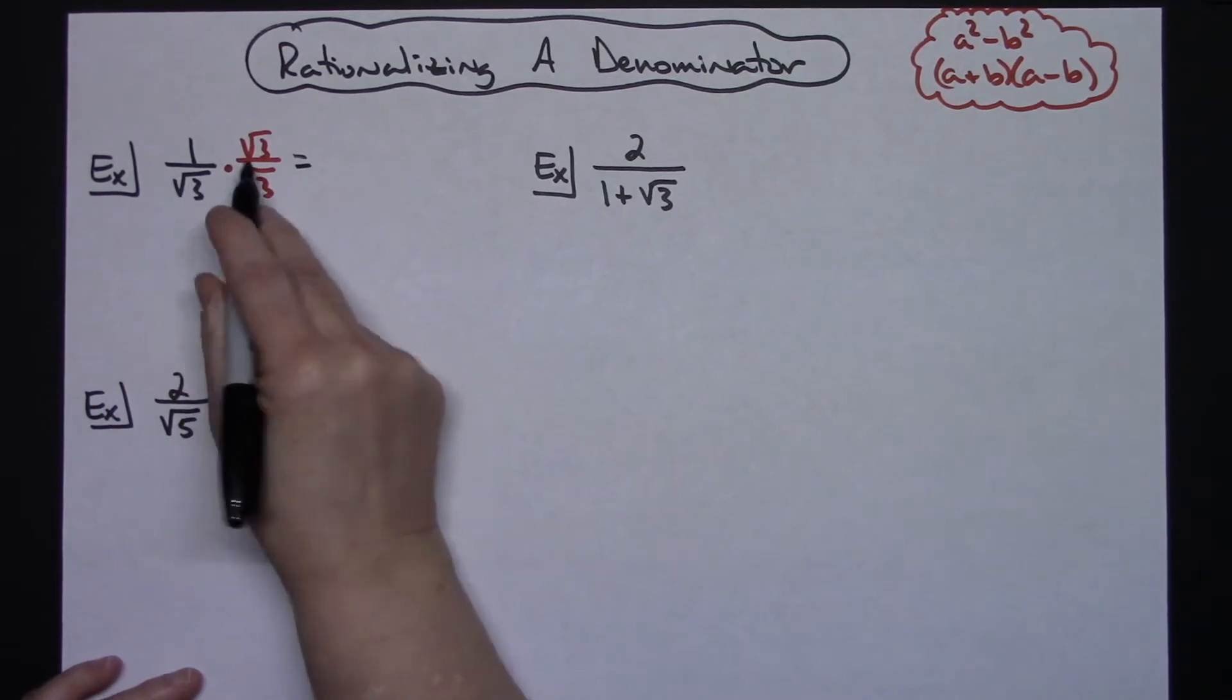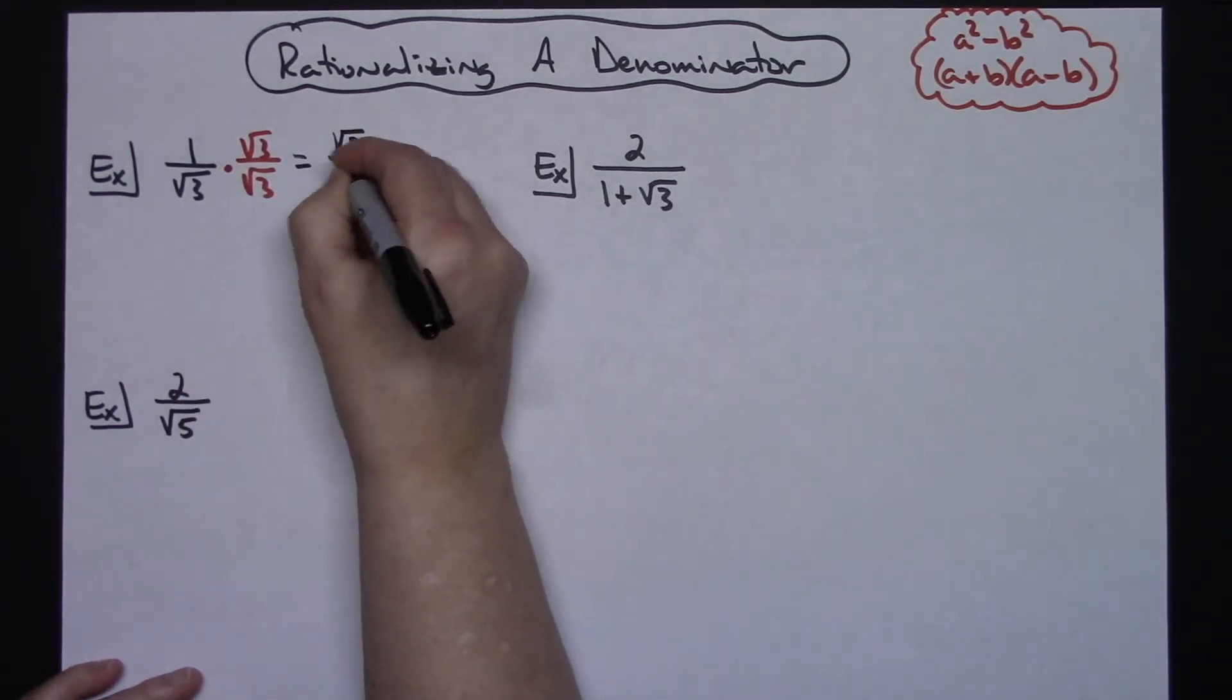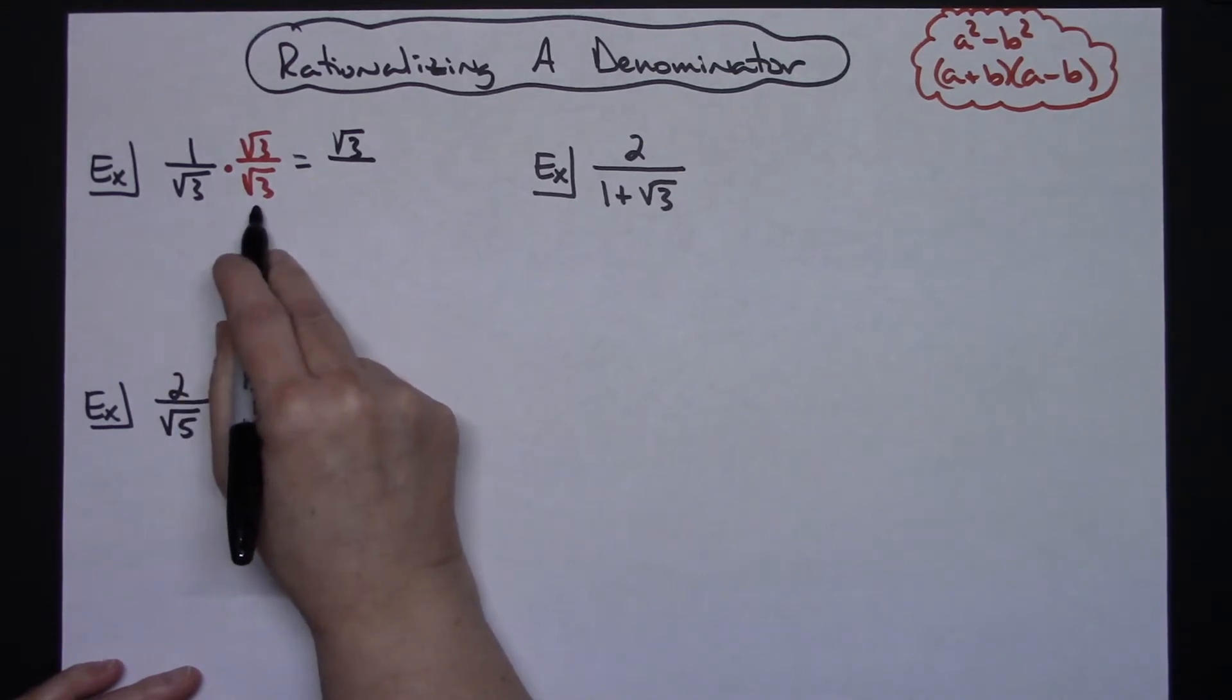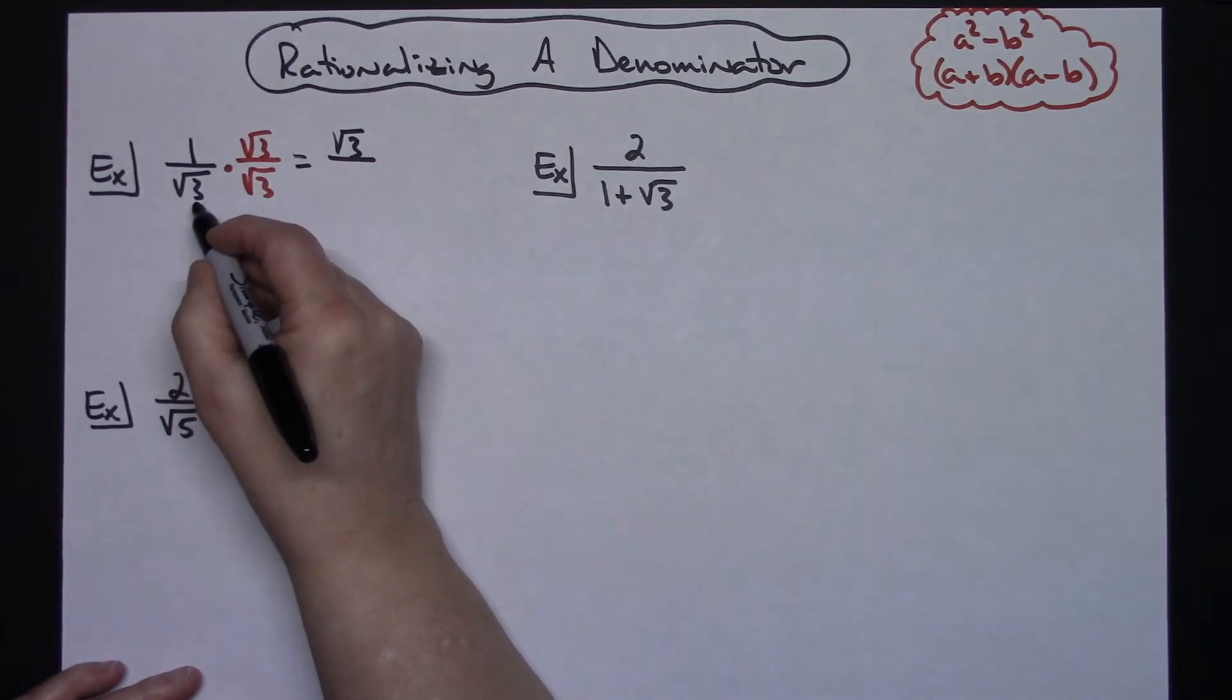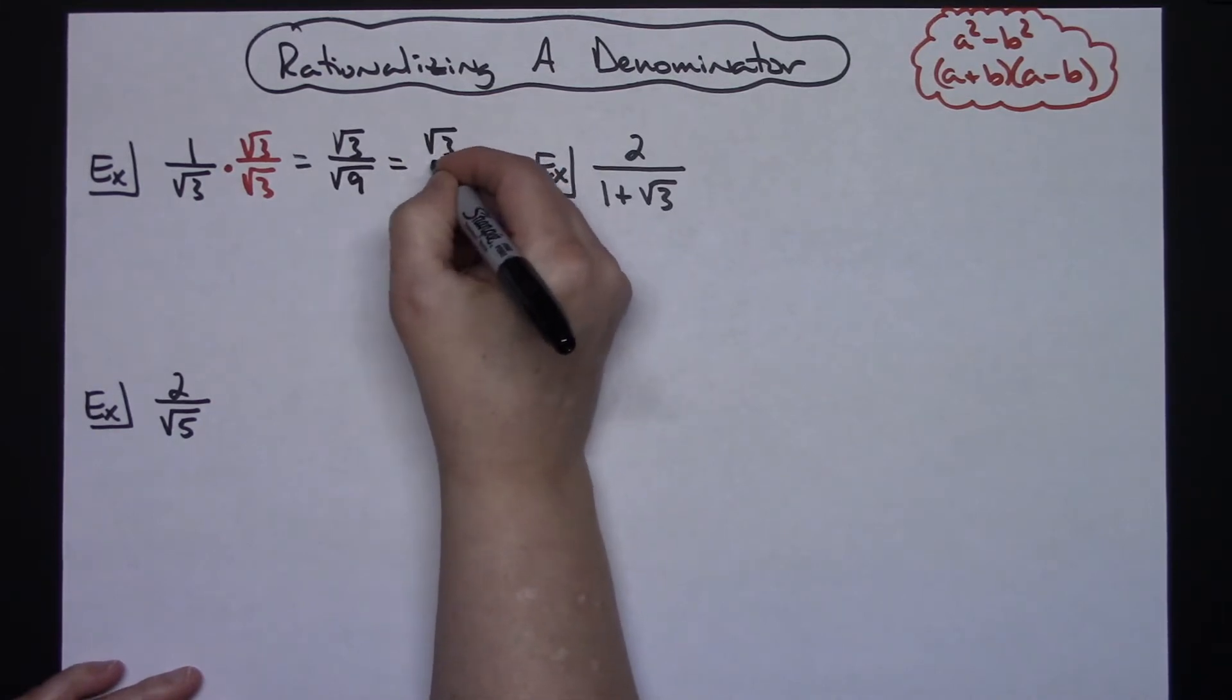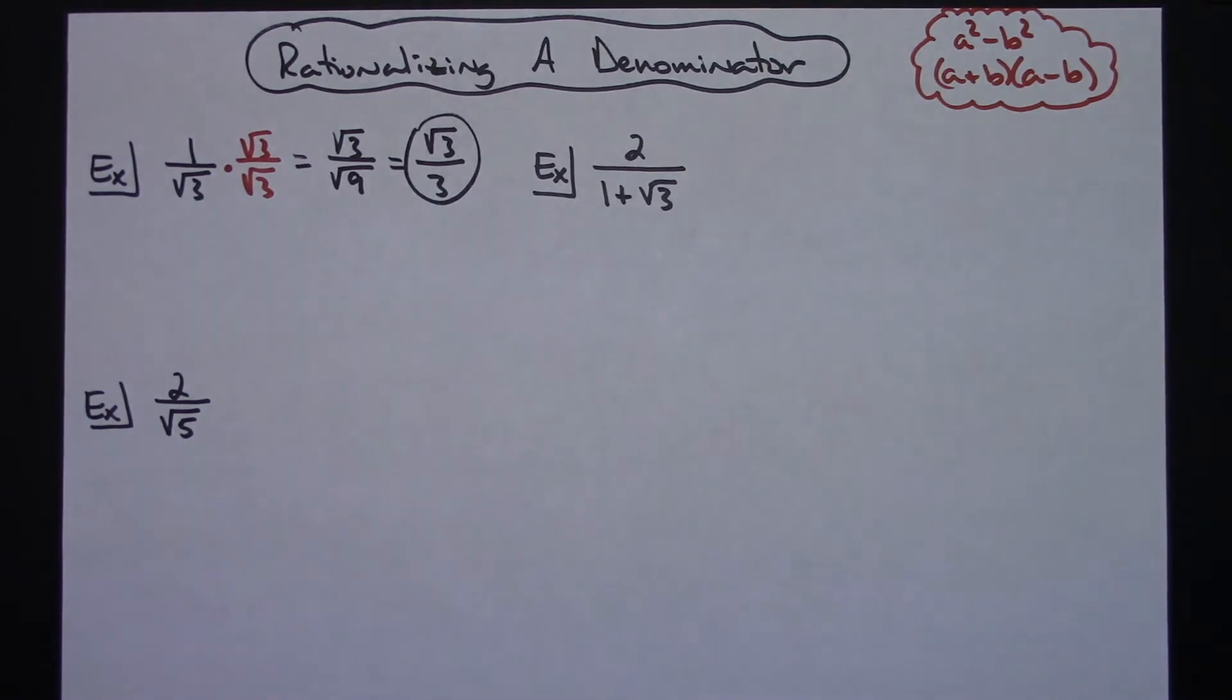1 times square root of 3 across the top is just going to be square root of 3. This one, square root of 3 times square root of 3—lots of you are just going to automatically know that's 3, but if you don't, you take 3 times 3, square root of 9, 3 times 3, and then this is 3. So a lot of you will be able to go square root of 3 over 3 right away and not do that step right there. But that is where it comes from.